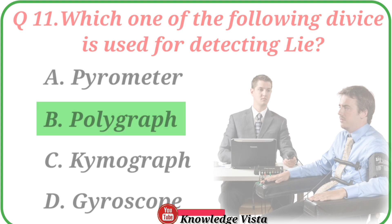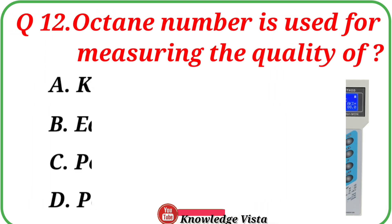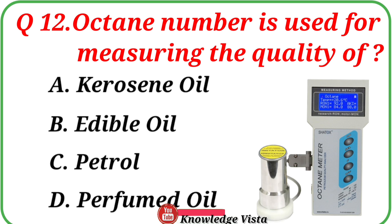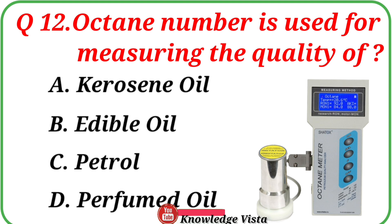Question number twelve: Octane number is used for measuring the quality of? Option A: Kerosene oil, B: Edible oil, C: Petrol, D: Perfumed oil. Correct answer is option C: Petrol.